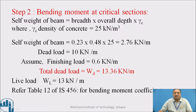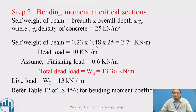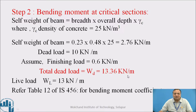Step 2: Bending moment at critical sections. We are going to determine the bending moment at different critical sections. The self-weight of the beam is calculated as breadth × overall depth × density of concrete (25 kN/m³) = 0.23 × 0.48 × 25 = 2.76 kN per meter. Dead load is 10 kN per meter. Assume a finishing load of 0.6 kN per meter. So total dead load WD = 13.36 kN per meter, whereas WL is given as 13 kN per meter.